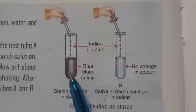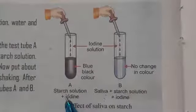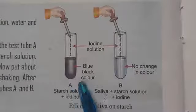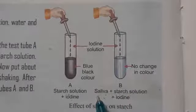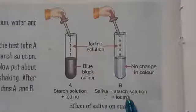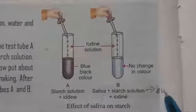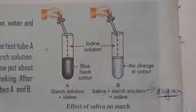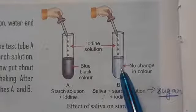In test tube A you did not add any saliva — there was only starch solution and iodine, so it turned blue-black in color. In test tube B, since you had added saliva, the saliva changed the starch solution into sugar. Once it is turned into sugar, you did not see any change in the iodine solution.